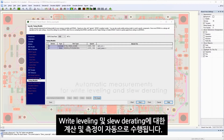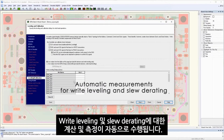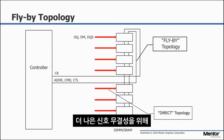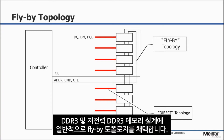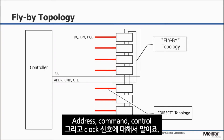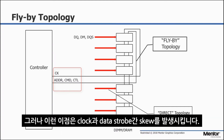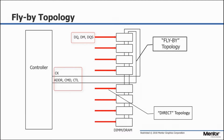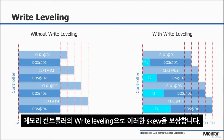Calculations and measurements are automatically done for write leveling and slew derating. DDR3 and low power DDR3 memory designs typically adopt a flyby topology for address, command, control, and clock signals. These benefits, however, create skews between clock and data strobes. Write leveling in the memory controller compensates for these skews.